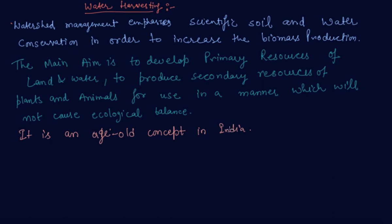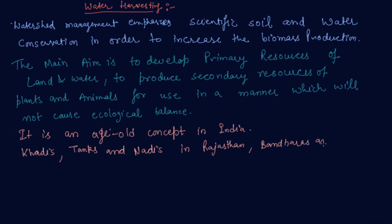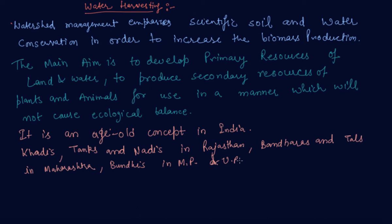Khadans, Tanks and Nadis in Rajasthan; Bandharas and Tals in Maharashtra; Bundis in Madhya Pradesh and UP; Arharas and Pines in Bihar — these are some of the ancient water harvesting and water conveyance structures still in use today.